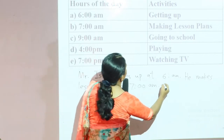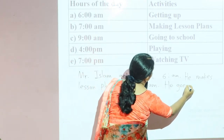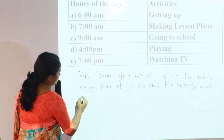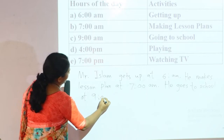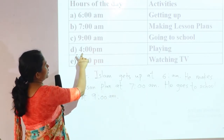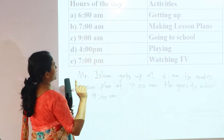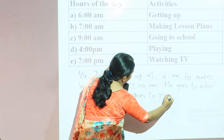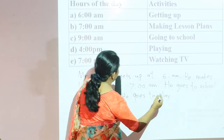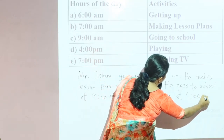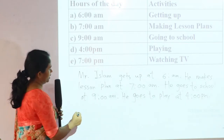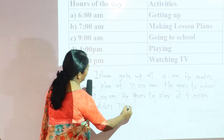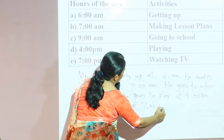Next, he goes to school at 9 a.m. At 4 p.m., he goes to play. And the last activity: he watches TV at 7 p.m.